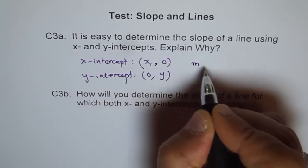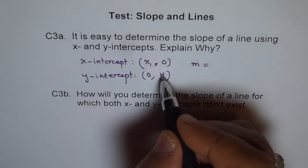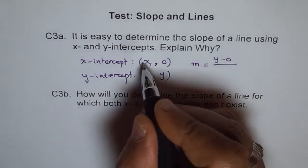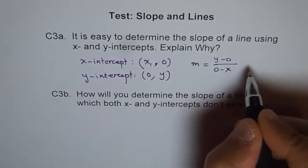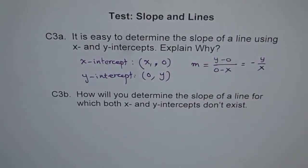Now the slope is so easy. Slope m of such a line will be y-0, which is y, divided by 0-x. So we get minus y over x. Do you see that? That's how it is. So it is very simple. If you use these two points, the ratio of those points with a negative sign, that is important, right?